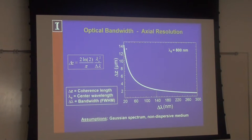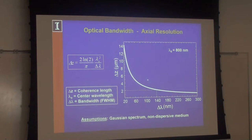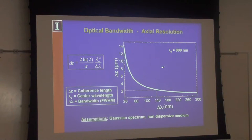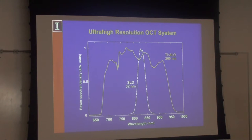The axial resolution in OCT is inversely proportional to the bandwidth: if you want a shorter coherence length and higher axial resolution, we need broader bandwidth, a larger Δλ. If we want to get down to 2 micron axial resolution we have to use quite unique optical sources with huge bandwidths, and that's hard to generate. Using longer wavelength light also makes resolution worse. These are trade-offs we always have to make.